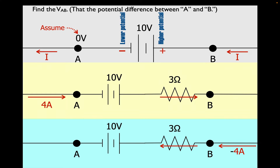When I go across the battery, I ignore the current for this calculation. I just know that I'm going from low potential to high potential, so I'm going to have a positive potential difference of 10 volts. At B, I have zero — what I started with — plus 10, the potential difference of the battery, so I have 10 volts. The potential difference is 10 volts between A and B. B is at positive 10, A is at zero, so B is the higher of the two potentials.